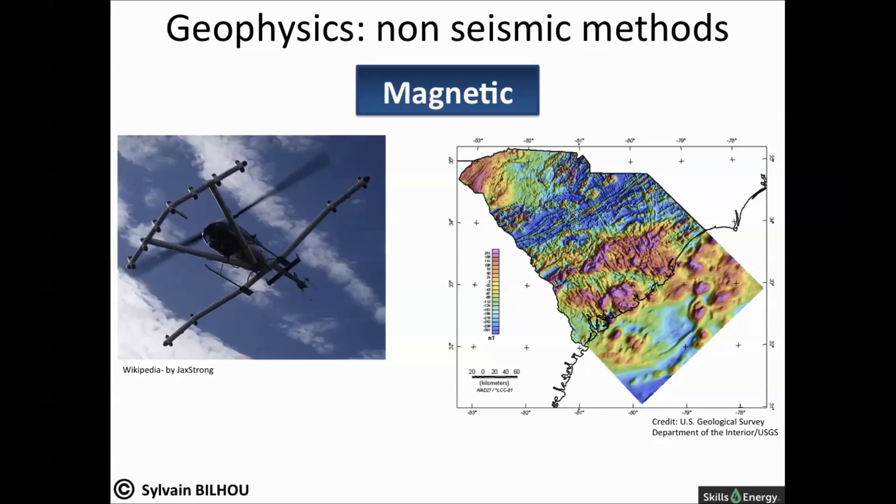The magnetometer measures the earth's magnetic field in units called Gauss or nanoteslas. It is very sensitive to rock containing a very magnetic mineral called magnetite. If a large mass of magnetite-bearing rock, like basement rocks, occur near the surface,